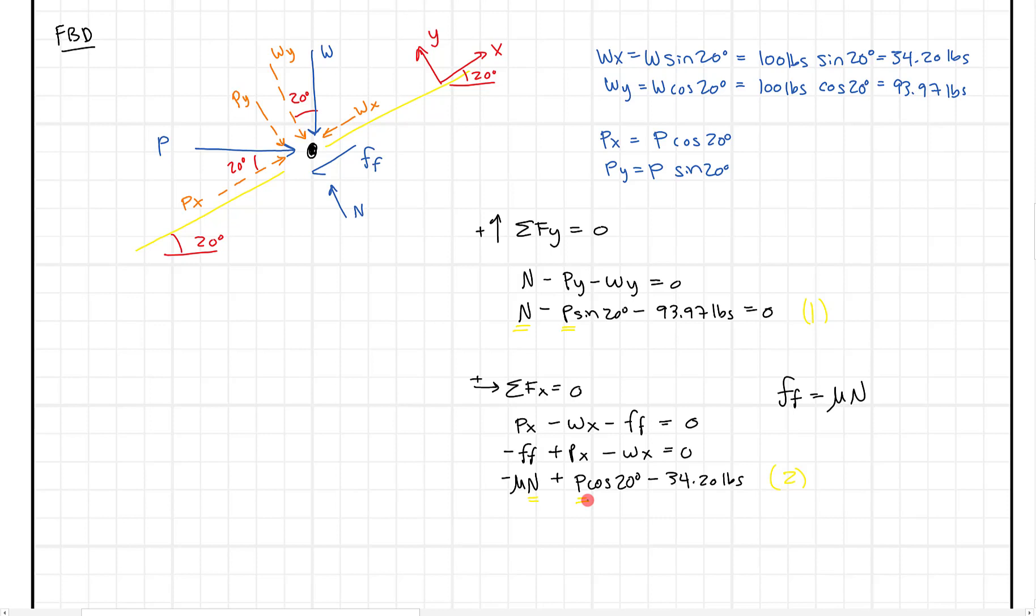So what we can do is we can go ahead and solve those. So you can do it in a number of different ways. You can do elimination, substitution. I'm just going to do substitution here. So I'm going to take this equation and write it right here. So what I'll say is, I know that N has to equal P sine 20 degrees plus 93.97 pounds. And once I know that, I can take it and I can substitute it in here. And now I can solve. So let's go ahead and do that. Where now, what do we get? We get minus mu times P sine 20 plus 93.97. And then we have to finish the rest of the equation. So we have plus P cosine 20 and minus 34.20 pounds.